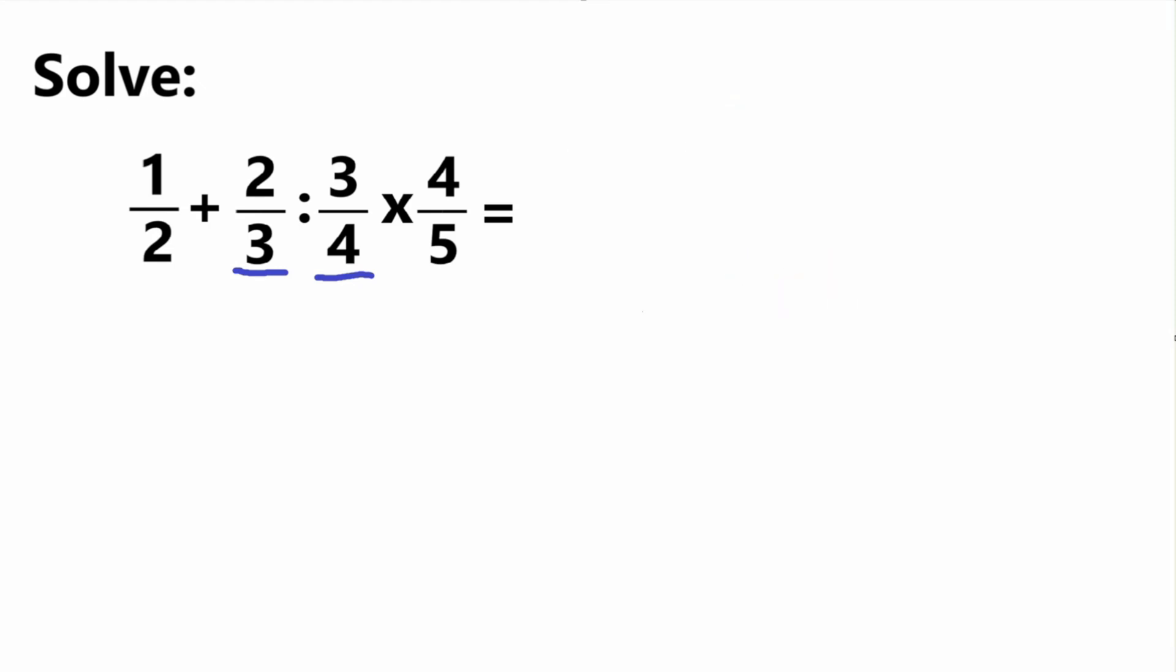So that means we're going to have our problem, so 1 half plus 2 thirds. Now instead of dividing by 3 fourths, it's going to be times the reciprocal which is 4 thirds, and then we still have times 4 fifths.